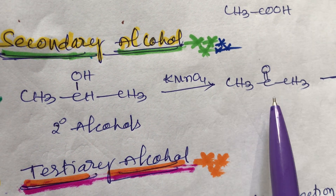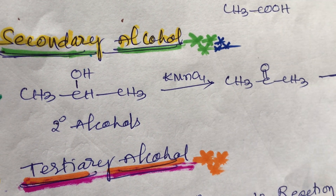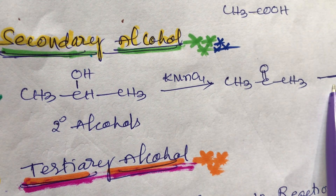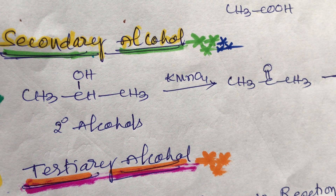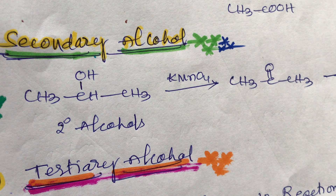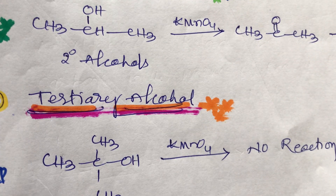Secondary alcohols oxidized with KMnO4 give acetone. Acetone has no further oxidation reaction. So secondary alcohols oxidized with potassium permanganate give only ketones.